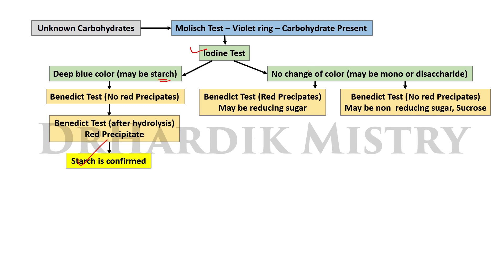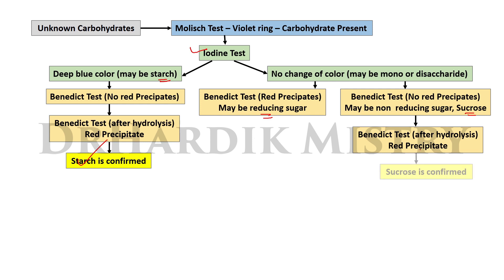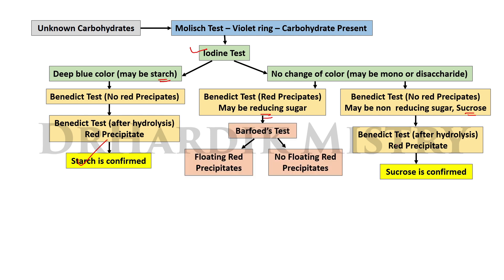In the iodine test, if you are not seeing any change of color, this may be due to mono- or disaccharide molecules. Perform the Benedict's test. If you are not seeing any red precipitates, this may be a non-reducing sugar — sucrose is present. Perform the Benedict's test after hydrolysis, and if red precipitates are seen, sucrose is confirmed.